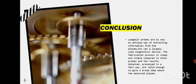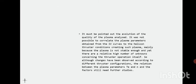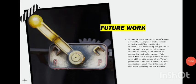For future work, in the future it may be very useful to manufacture a versatile Langmuir probe capable of being modified inside the chamber. The collecting length would be changed in a matter of minutes instead of hours of time needed to pressurize and make vacuum. This would lead to a large number of data sets with a wide range of different geometries that would serve to draw conclusions about the influence of the probe geometry on the results.